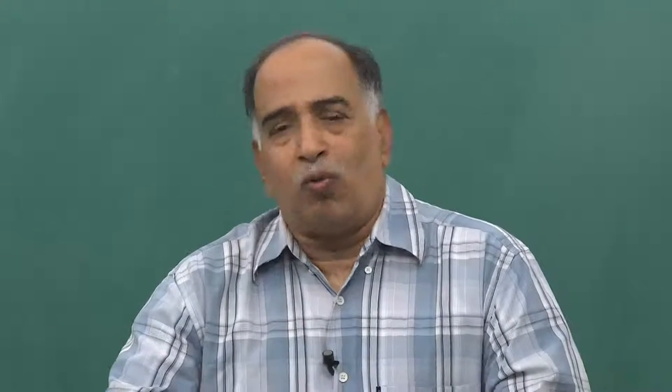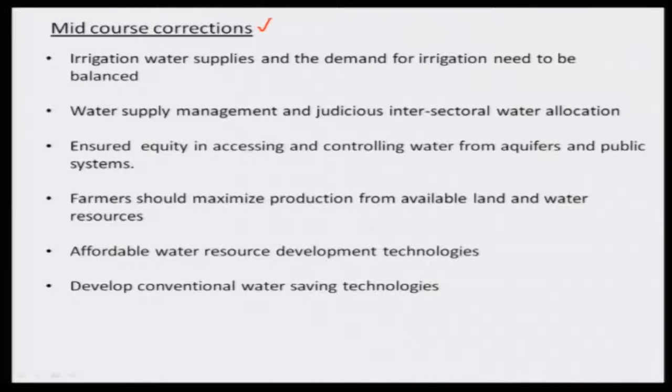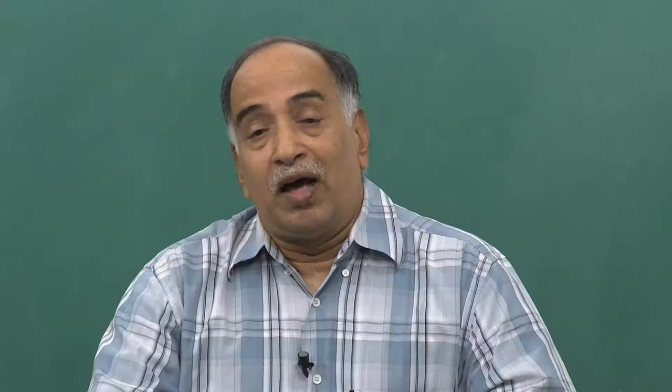One way of doing it — there is flood irrigation which is very prevalent in agriculture practices. Now water shortages have come up. How do you feed the plant? This is one simple thing we can talk about. So that is what we are talking about as mid-course corrections. The water supply and demand need to be balanced — meaning the irrigation water should always be available, or based on the availability of water, your irrigation quantity should be balanced.